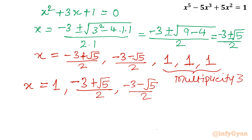One more way of solving this problem is by factorization. You can add x⁴ and subtract x⁴, split minus 5x³ as minus 4x³ minus x³, and split 5x² as x² plus 4x². Then take x minus 1 as a common factor from the quintic equation. Repeating this process twice, you get (x minus 1)³ times (x² plus 3x plus 1) equals 0 — the same solution as the synthetic division method.